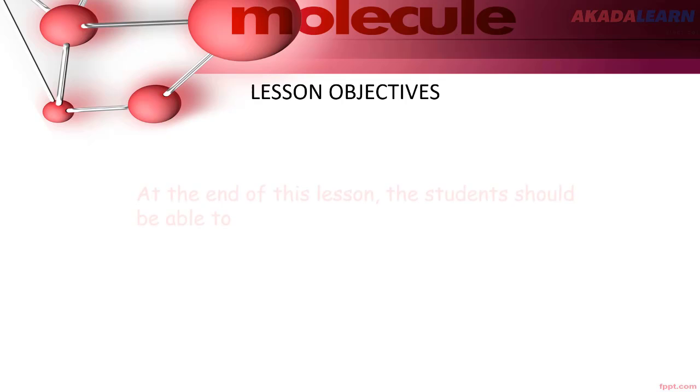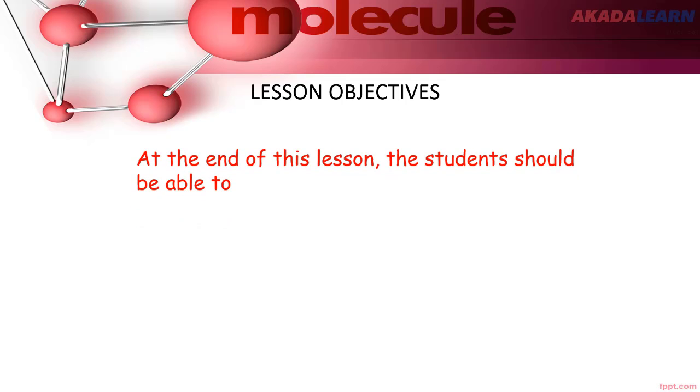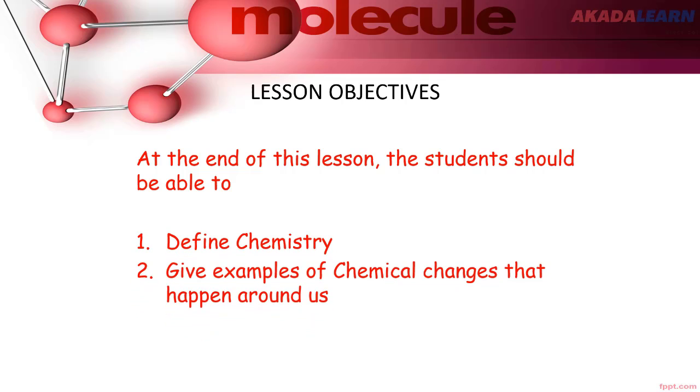Lesson objectives. At the end of this lesson, the students should be able to define chemistry, give examples of chemical changes that happen around us, and mention some professions that require chemistry.